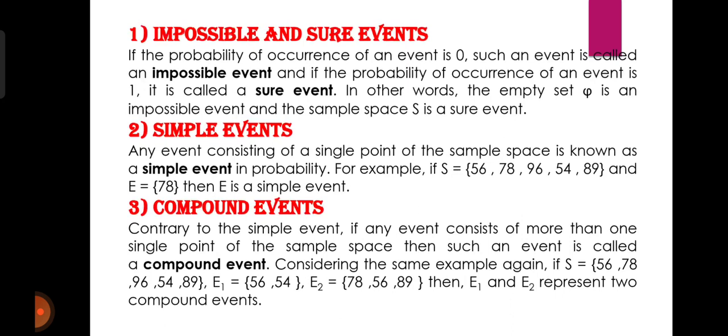Next: compound events. Contrary to the simple event, if any event consists of more than one single point of the sample space, then such an event is called a compound event। यानि कि अगर कोई event ऐसी है जिसमें एक से ज़्यादा single points of sample space available हों, तो वो हो जाएगी compound event। जैसे S = {56, 78, 96, 54, 89}, E1 = {56, 54} और E2 = {78, 56, 89} — तो E1 और E2 दोनों compound events हैं क्योंकि दोनों ही same sample space से belong कर रहे हैं और एक से ज़्यादा points हैं।